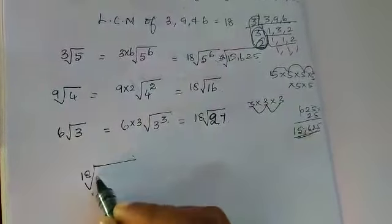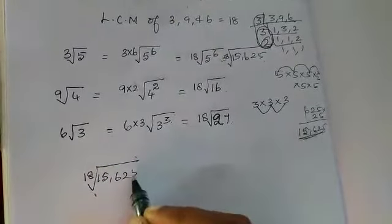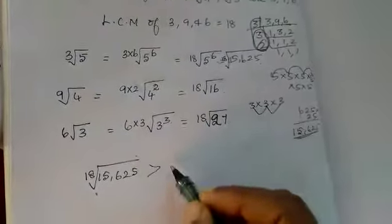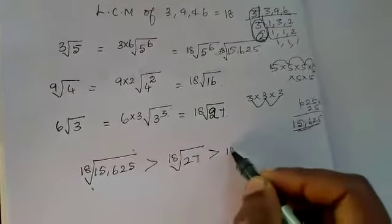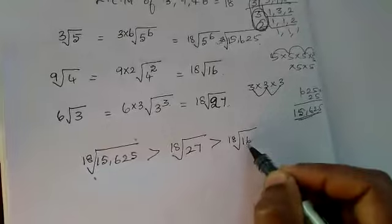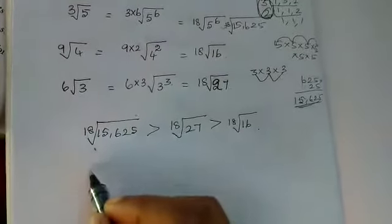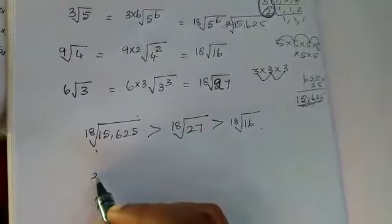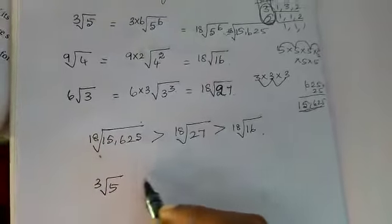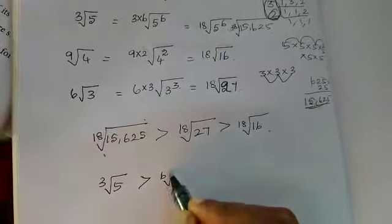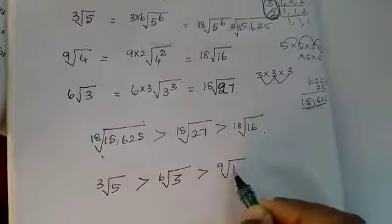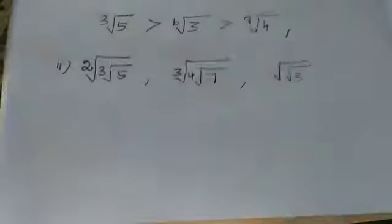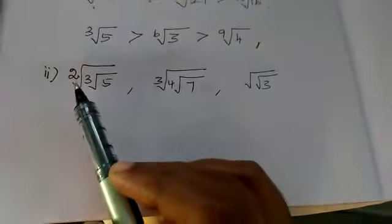18 root of 15,625. Next, which one is? 18 root of 27. Next, 18 root of 16. Now, tell me the answer. Cube root of 5 is greater than 6 root of 3, which is greater than 9 root of 4. This is the answer. Now, see the next question.